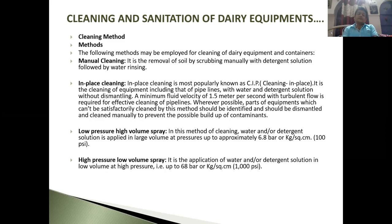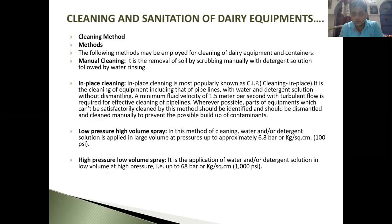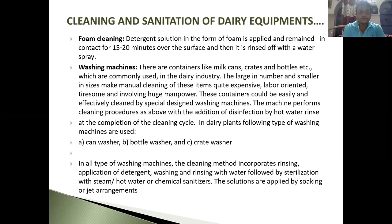CIP is done basically in two-step, five-step, and seven-step programs, which I will discuss later. In the low-pressure high-volume spray method, cleaning water and detergent solution is applied in large volume at pressure up to approximately 6.8 bar. High-pressure low-volume spray can also be used. In foam cleaning, detergent solution in the form of foam is applied and left in contact for 15–20 minutes over the surface, then rinsed off with a water spray.